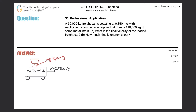Number 36. Professional application. A 30,000 kilogram freight car is coasting at 0.85 meters per second with negligible friction under a hopper that dumps 110,000 kilograms of scrap metal into it. Letter A: What is the final velocity of the loaded freight car?